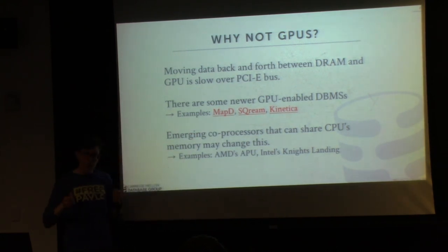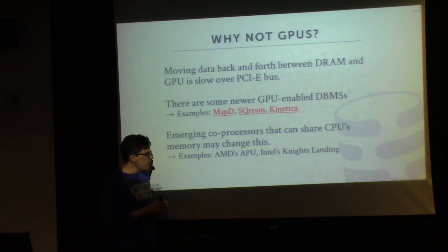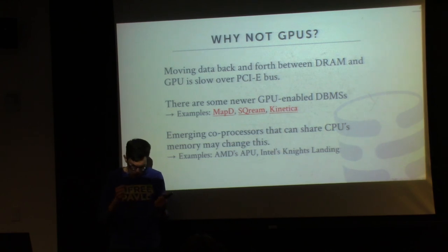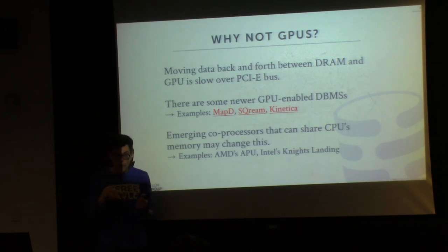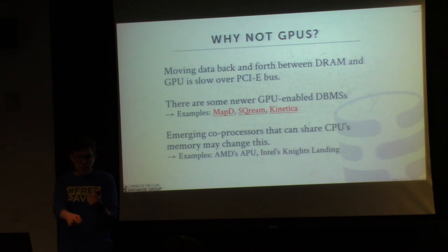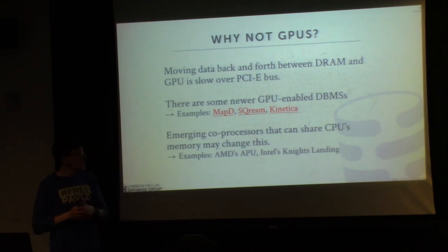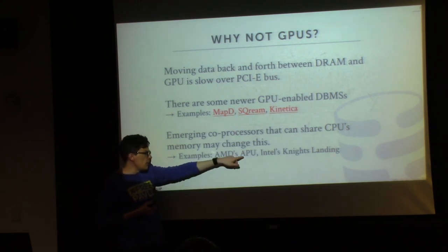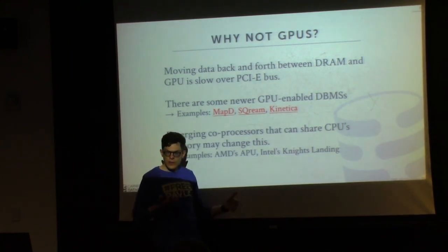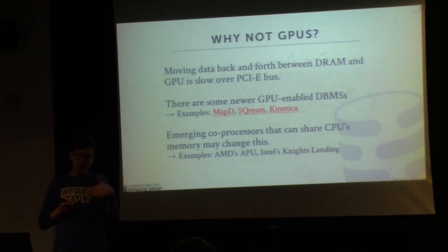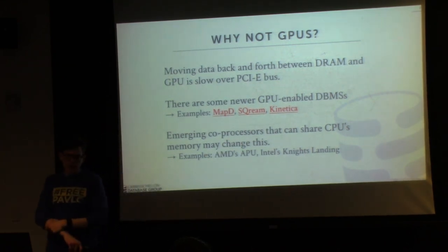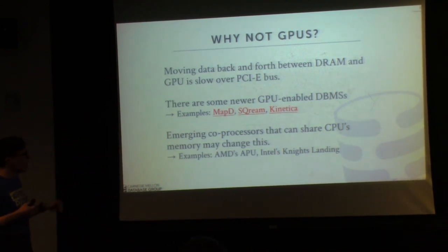What actually might be a big game changer are newer coprocessors where the GPU or really vectorized hardware is directly on the socket with the regular CPU and is cache coherent. That means the GPU on the socket can access the same memory that the CPU sees and everything is in sync — you don't have to go back and forth over the PCI Express bus. AMD has something called APU, Intel has their Knights Landing coprocessor, and Intel bought the startup Nirvana to put deep learning things directly on the socket. When these things come out, you might be able to push some of what we talk about today to a GPU and have it run faster than SIMD.